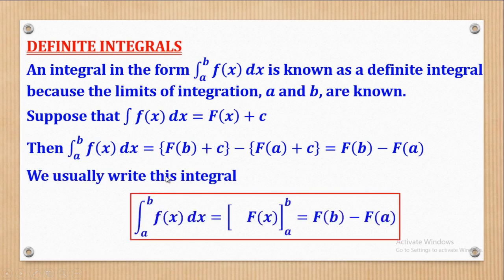Therefore, we shall write it in this way: the integral from a to b of f(x) with respect to x will be equal to F(x) with box brackets. We no longer put the integral symbol; we put box brackets, with the lower limit at the bottom and the upper limit at the top. To remove the box bracket with these limits, you substitute — put b for x to get F(b), minus the lower limit a to get F(a).